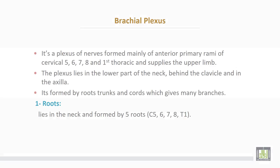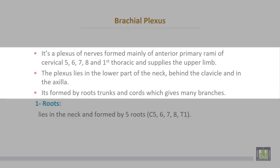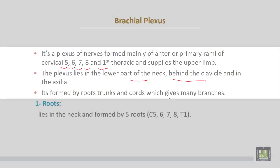The brachial plexus is a plexus of nerves formed mainly from the anterior primary rami of cervical 5, 6, 7, 8, and the first thoracic nerve, and supplies the upper limb. The plexus lies in the lower part of the neck, behind the clavicle, and reaches the axilla. It is formed by roots, trunks, and cords, which give many branches.